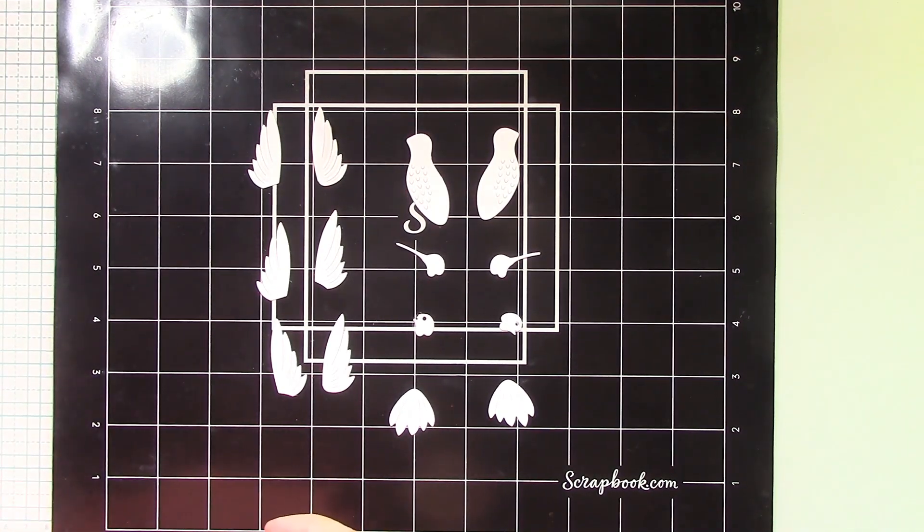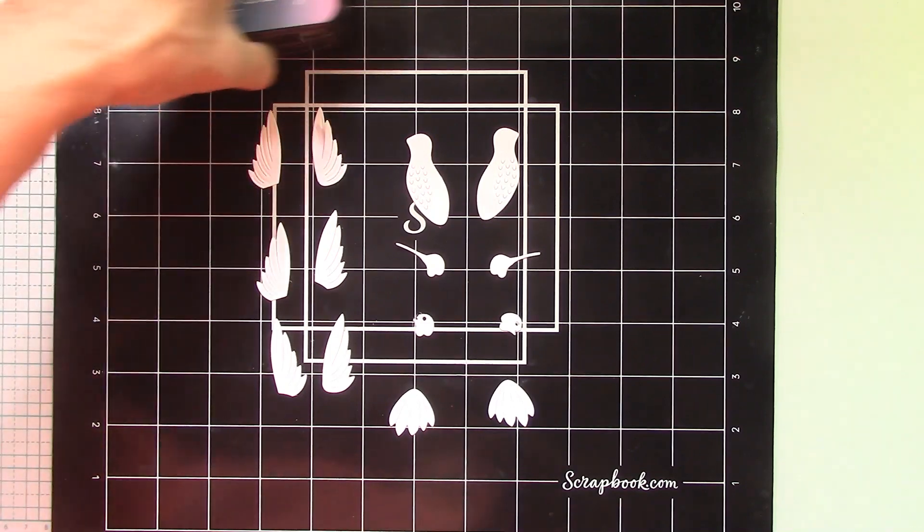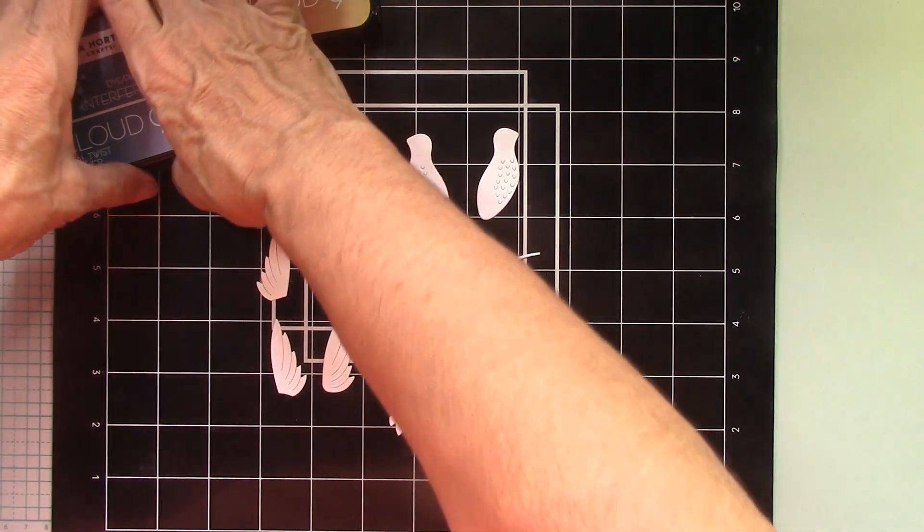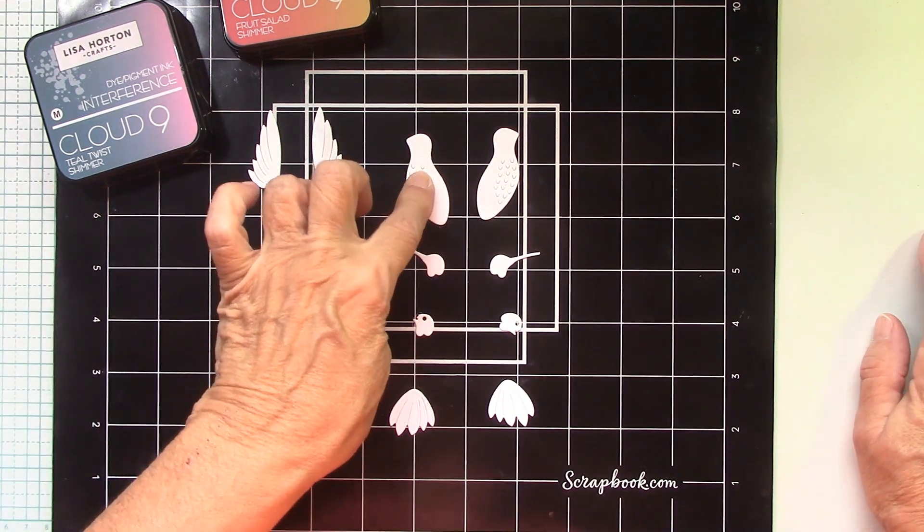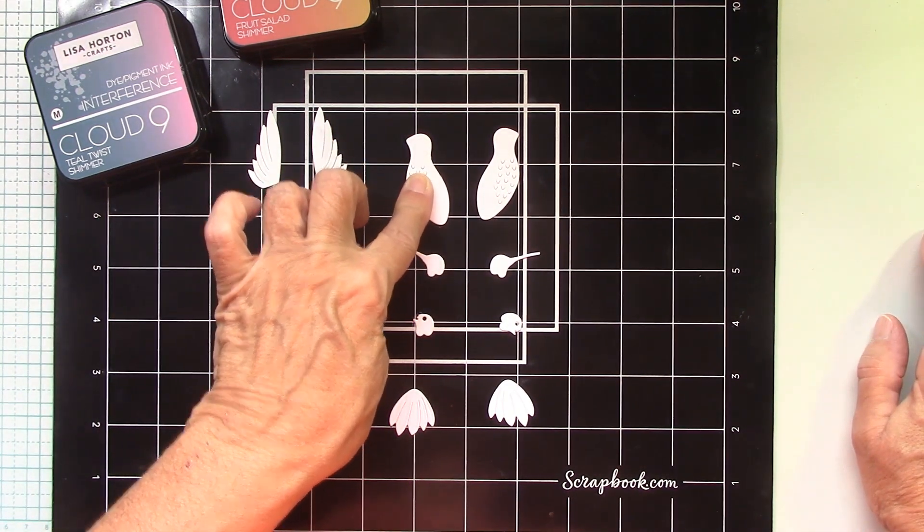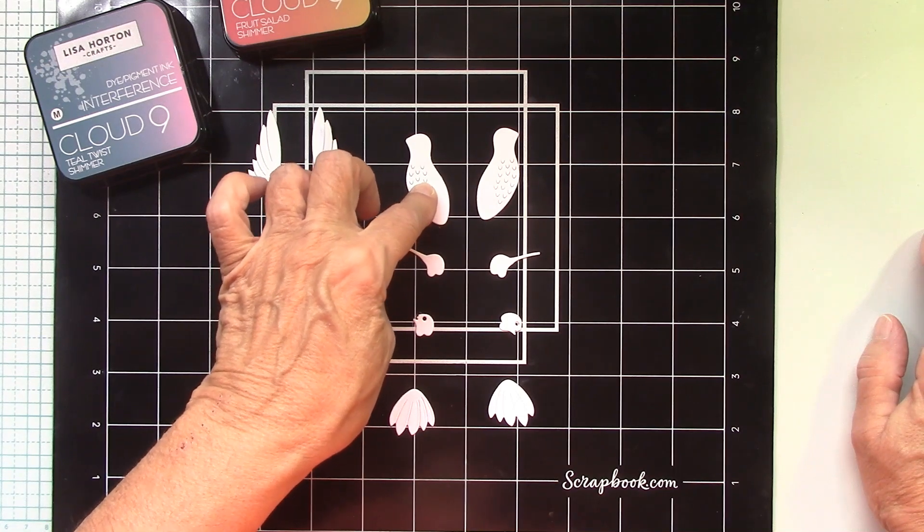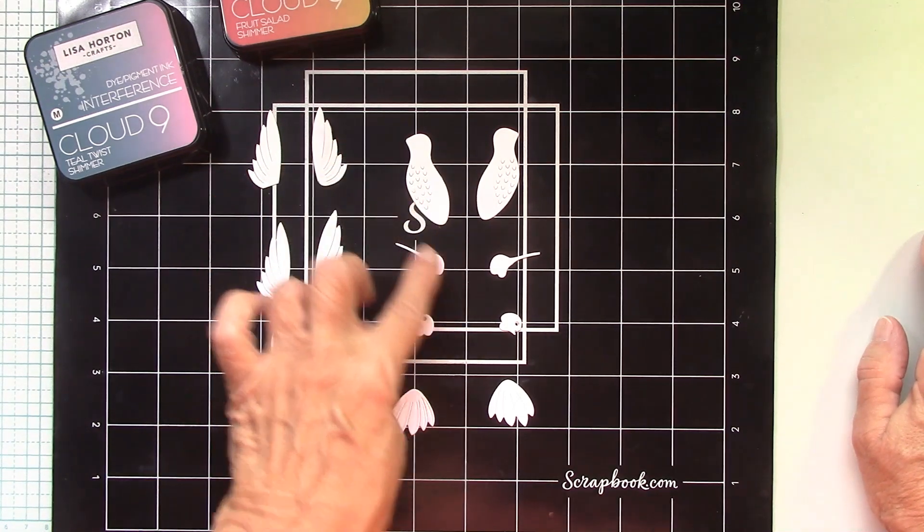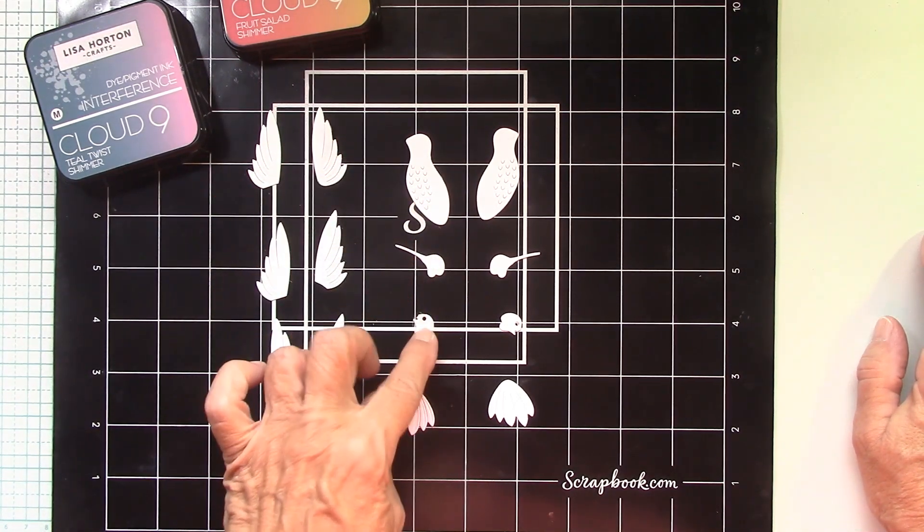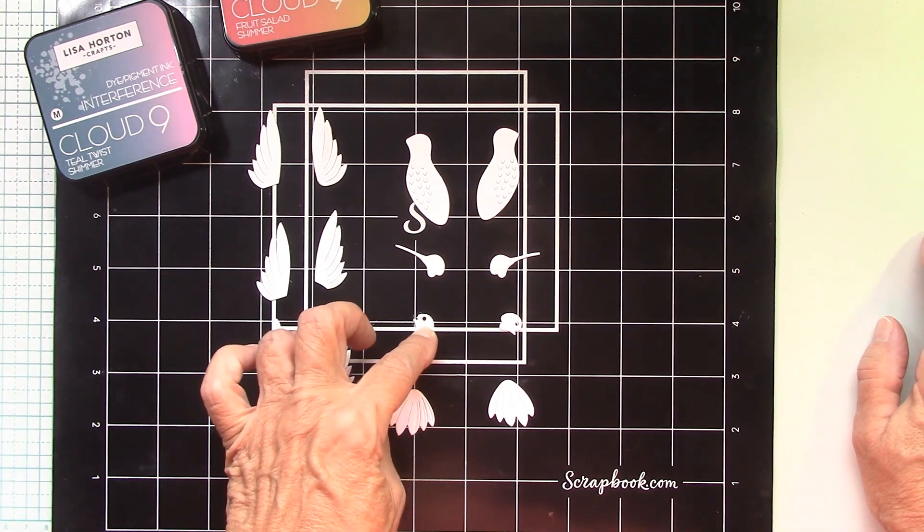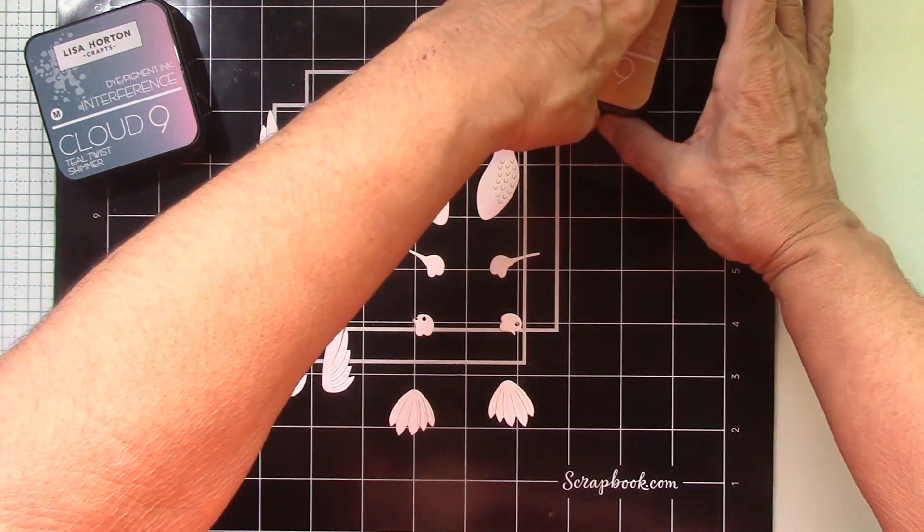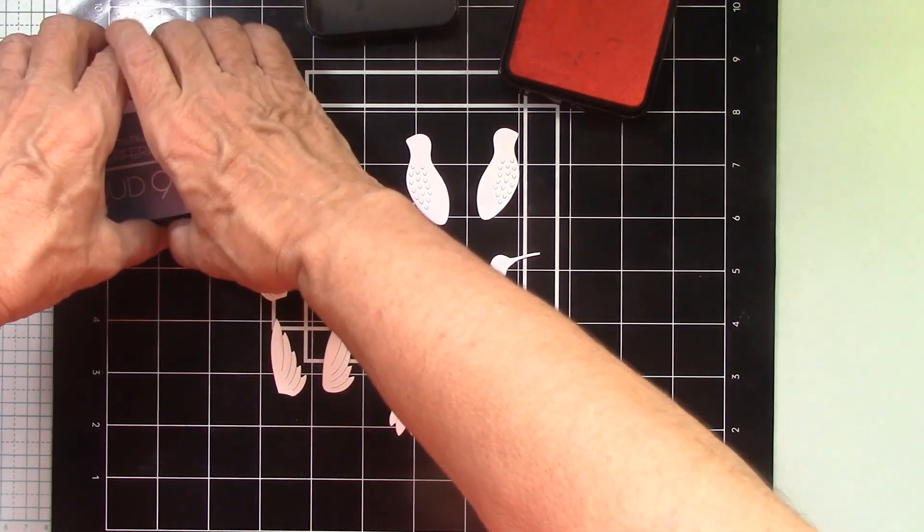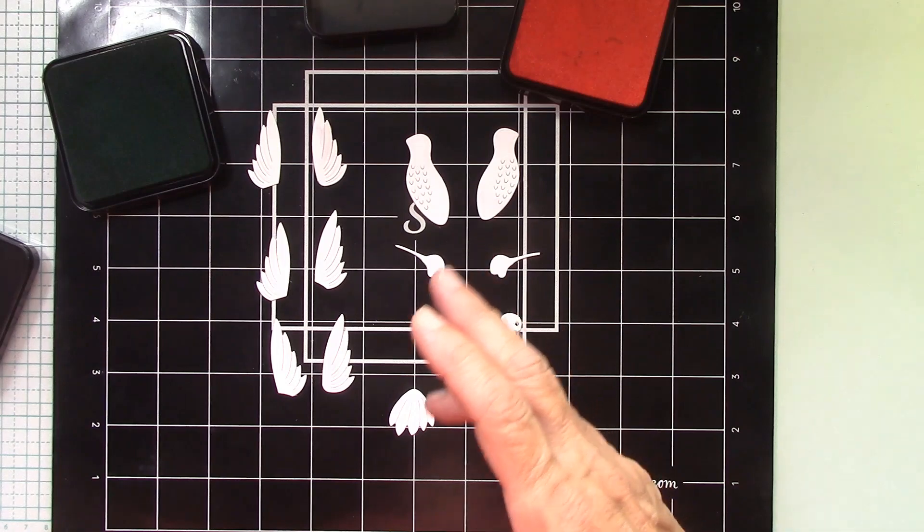And this interference ink. I've had a lot of fun with this. Okay. So what I want to do is I want this bird to be the pinkish color. I want a blue beak. I want a little pink head and a blue tail. Let's try to get that accomplished. Okay. So let's open up our ink.